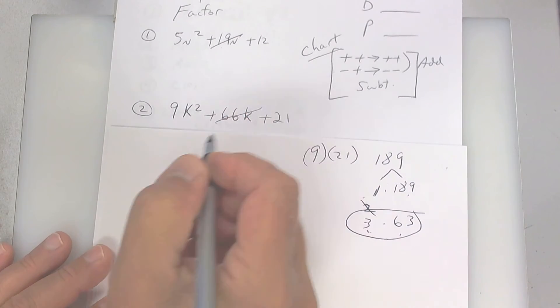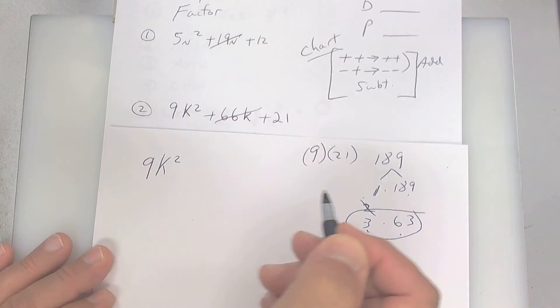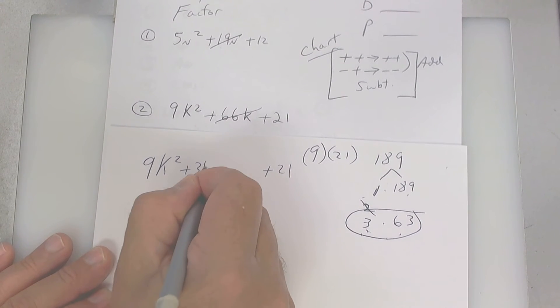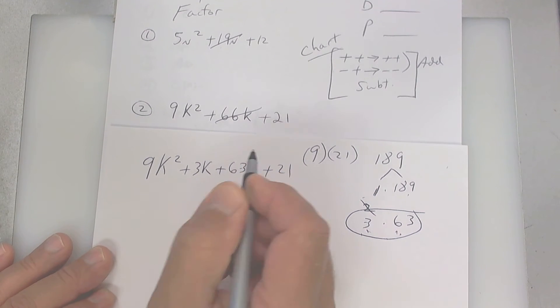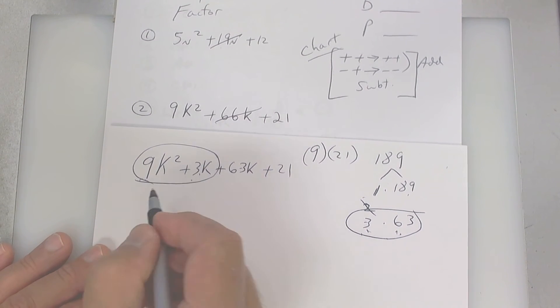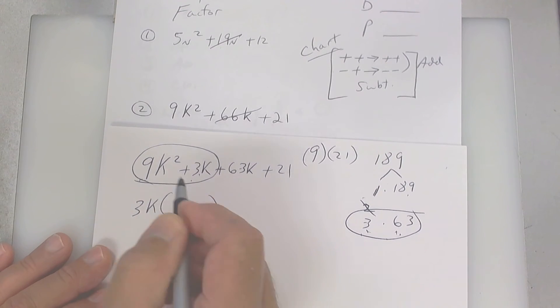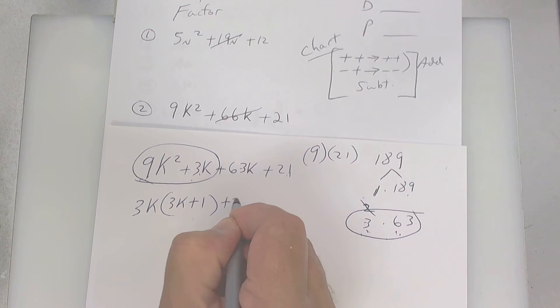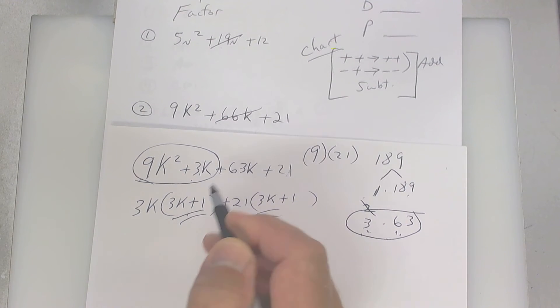So you're going to substitute this in place of this. Put 9k squared up front, put 21 in the back, and then right here put plus 3k and then plus 63k. And then factor it out. So here it looks like they have a 3 in common and a k, so you're going to be left with 3k plus 1. Here it's got to be 21 to get a 1 right here, so take out a 21 and that's going to be 3k plus 1. You have one here, one here, you're going to take one out. And we're almost done, so we're left with 3k plus 21.